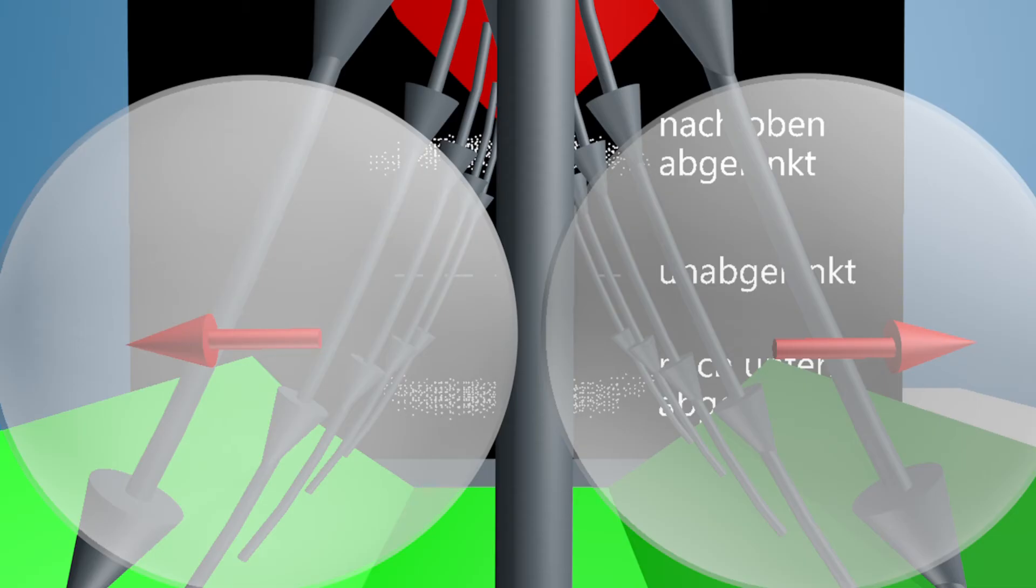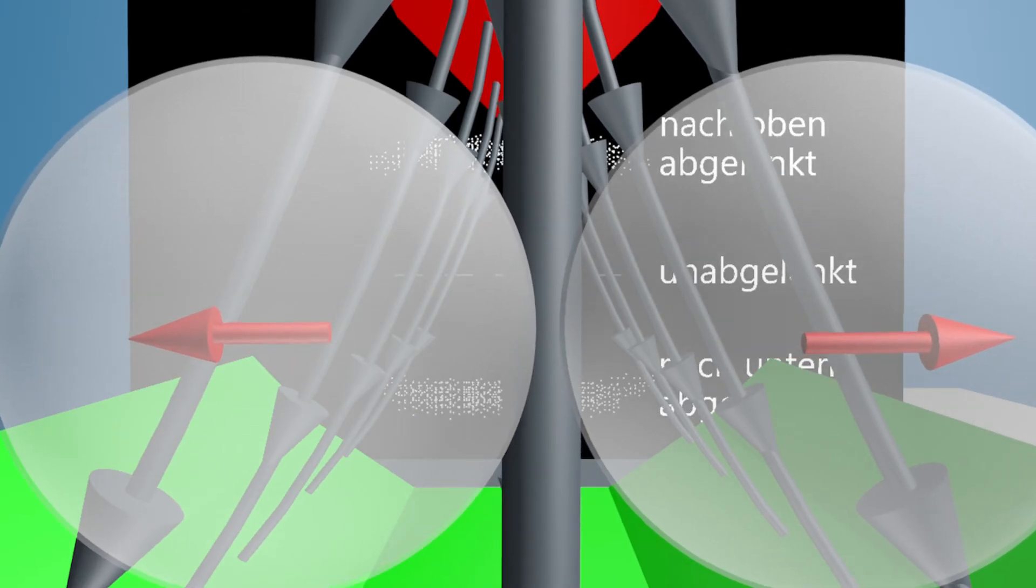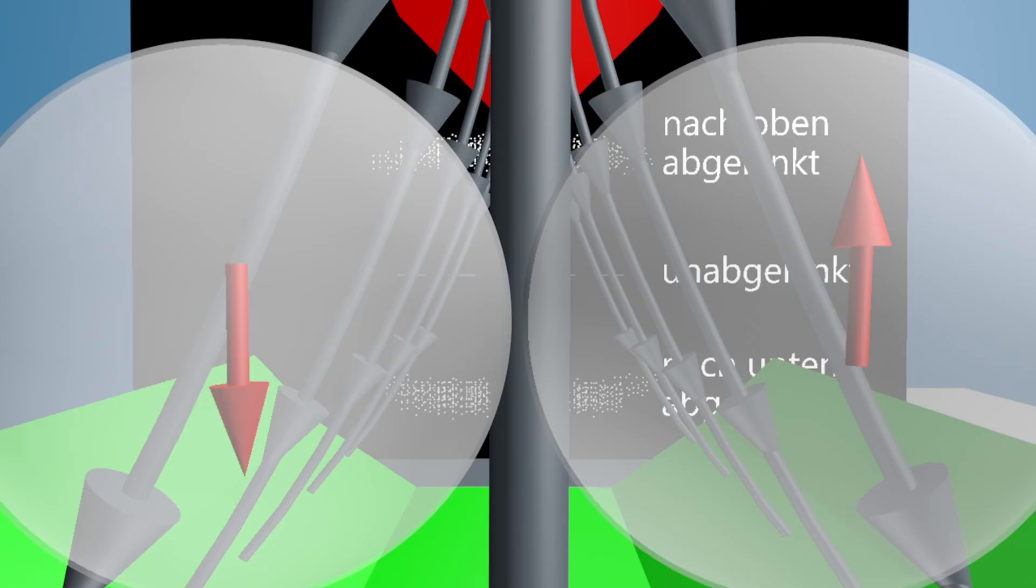Before entering the magnetic field, the spins are oriented in all possible directions. When entering the magnetic field, the spins align with the magnetic field.